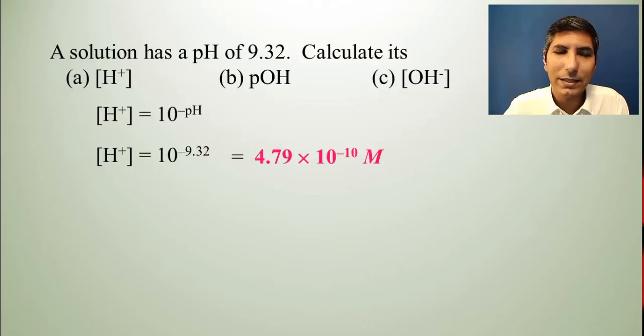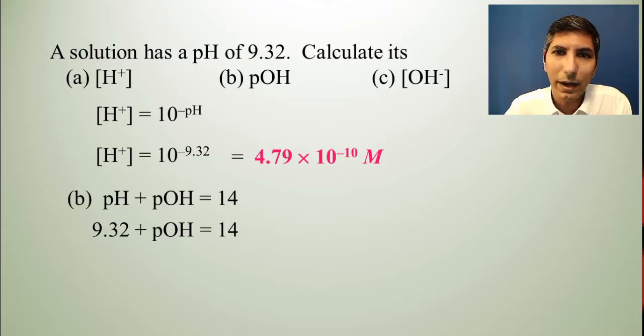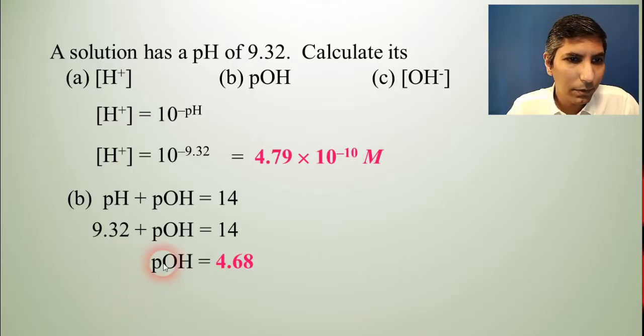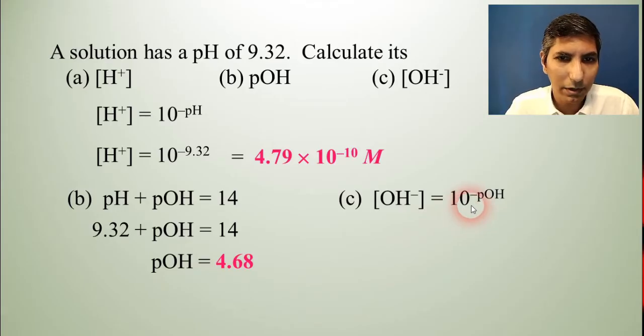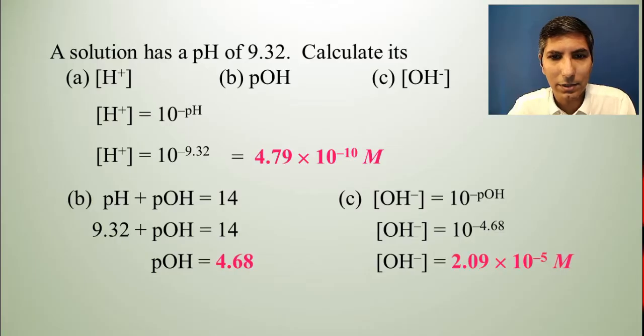Now, part B says calculate the pOH. Well, I know that pH plus pOH equals 14. So, for part B, I just plug in the pH there, just take the 9.32 and subtract it from 14 to find the pOH. And I find that the pOH is 4.68. Now, once I have this information, I can solve for part C very easily as well. In fact, there are a couple different ways to find the hydroxide ion concentration. I'm going to basically take this equation here and use 10 to the negative pOH equals the hydroxide ion concentration. And I found that the pOH was 4.68. Just take 10 to the negative 4.68 power. And I find that the hydroxide ion concentration is equal to about 2.09 times 10 to the negative fifth moles per liter.